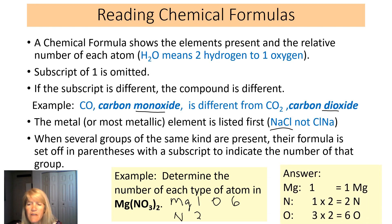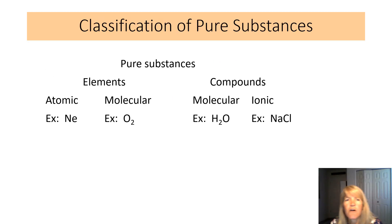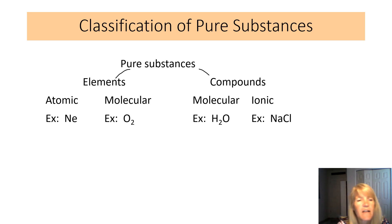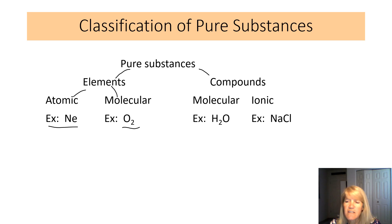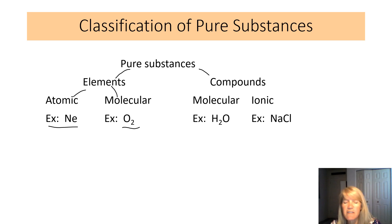Pure substances can be elements or compounds. Elements can be atomic or molecular. Many elements exist as individual atoms — neon, for example. But some exist in pairs: oxygen doesn't float around as a lone O atom; it bonds with another oxygen to form O₂. That makes it molecular. It's still an element because it has all the same atoms, but it's a molecule because more than one atom is bonded together.